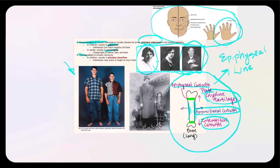Hyposecretion is the reverse — the anterior pituitary does not produce enough growth hormone. Undersecretion will lead to pituitary dwarfism. A photograph shows an individual with this condition next to a man with gigantism; the differences in height and stature are quite obvious, while a woman on the right appears to be of average or normal stature.